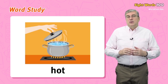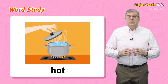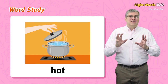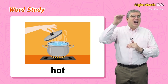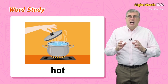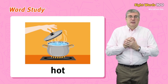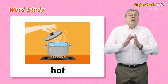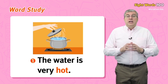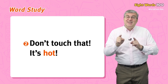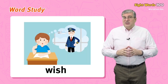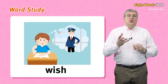Next we have hot. We use the word hot to say that something has a very high temperature. If something is too hot, it can burn us, so be careful. For example, the water is very hot, or don't touch that — it's hot.